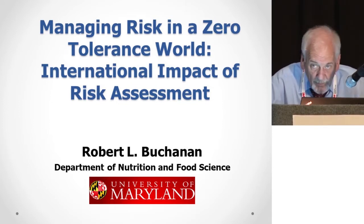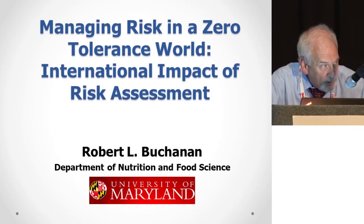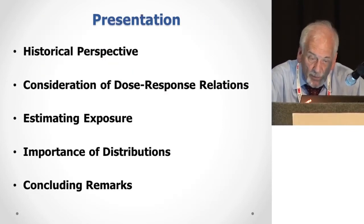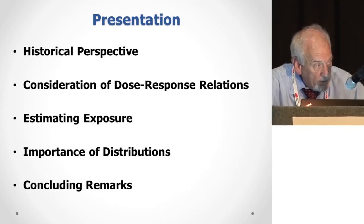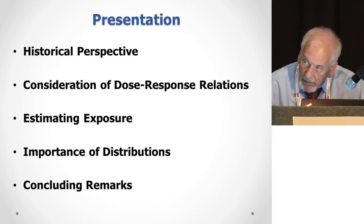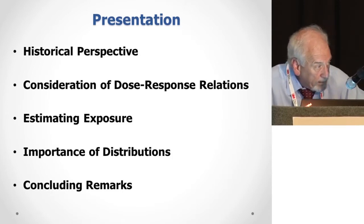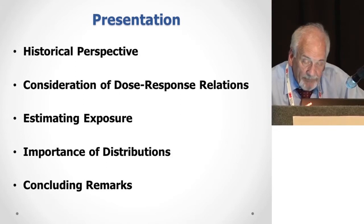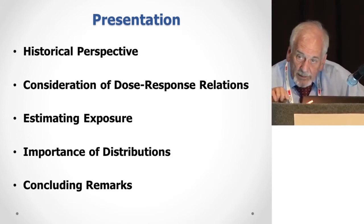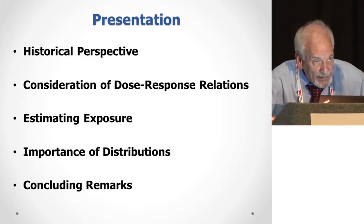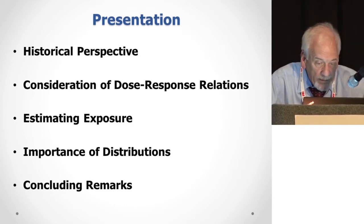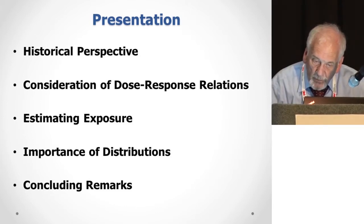What I'd like to do in my presentation is cover the following five areas: give you a little historical perspective, then focus on dose-response relationships and how they affect how we look at the risk associated with food-borne disease, a little bit about estimating exposures, the importance of distributions, and then finally a couple of concluding remarks.